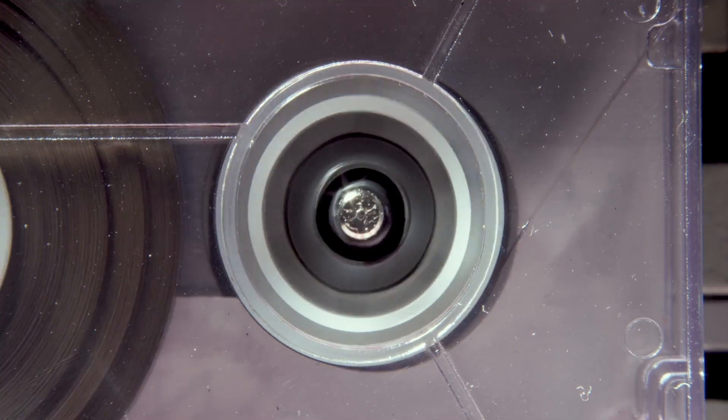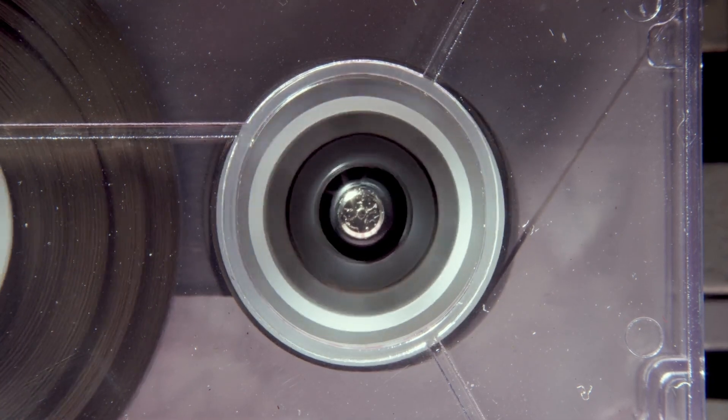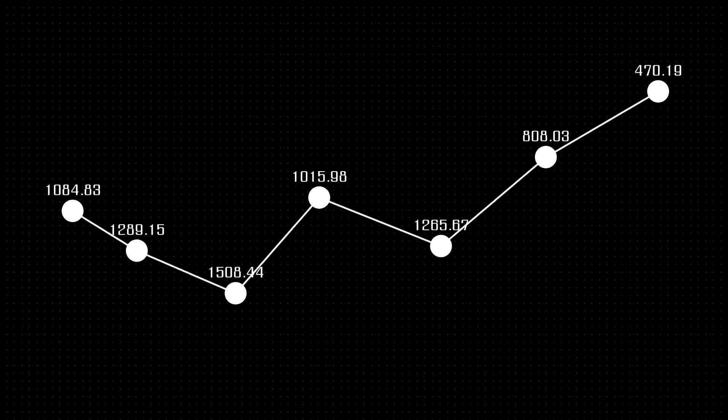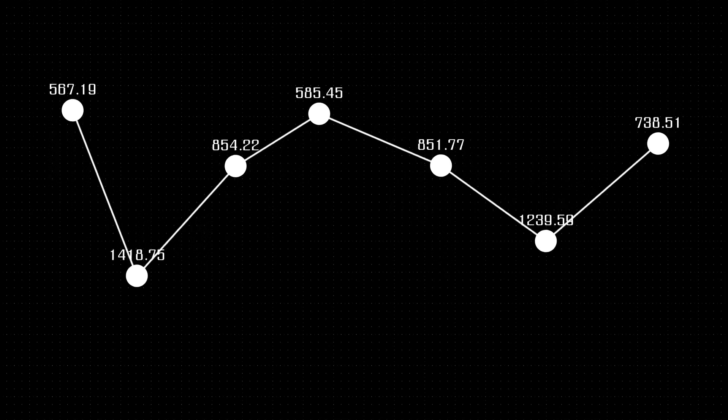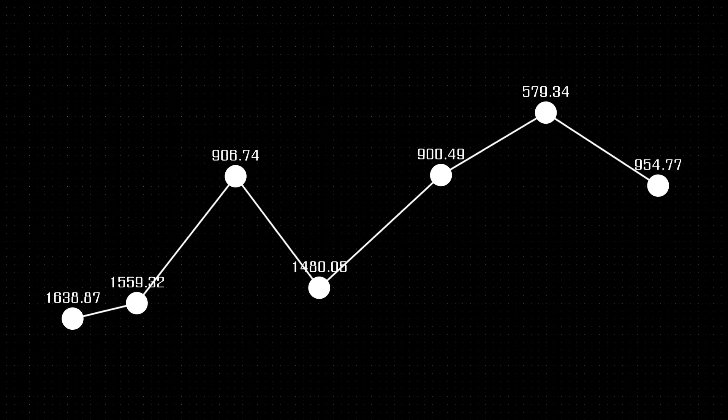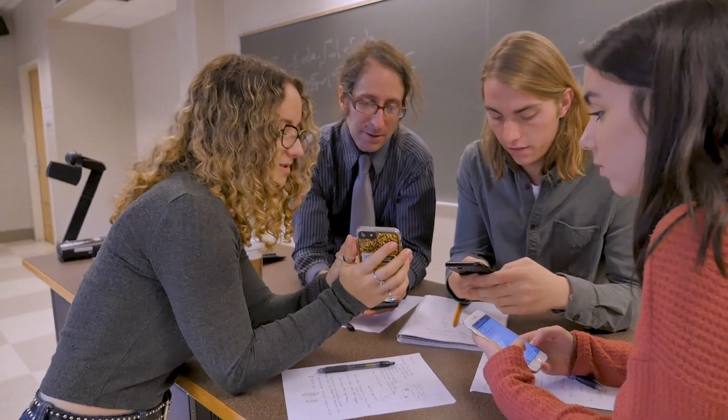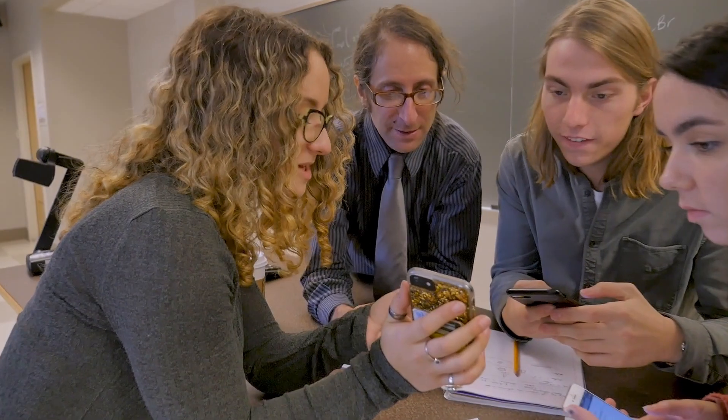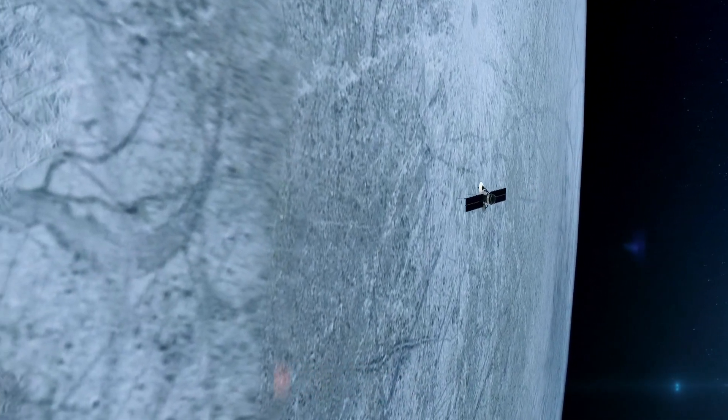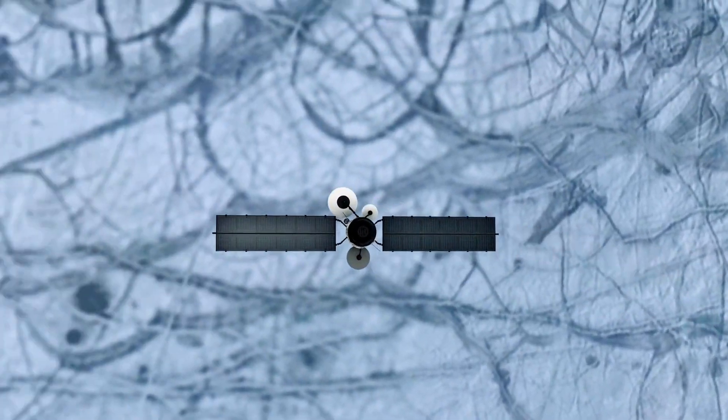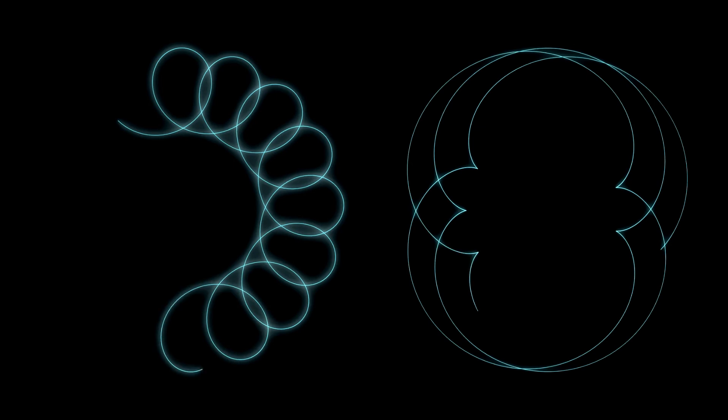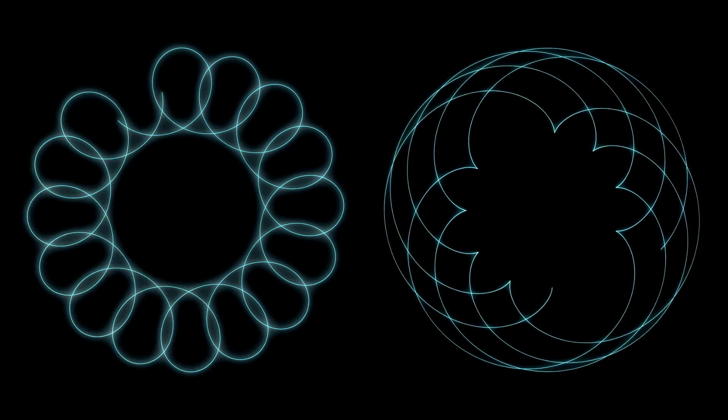Cassini's daring final mission, known as the Grand Finale, brought us unprecedented insights into Saturn and its rings. During its last orbits, the spacecraft dived between Saturn and its innermost ring, providing detailed data about the planet's atmosphere, magnetic field, and gravity. It confirmed that the rings are gradually losing mass as ice particles spiral inward, creating what scientists call ring rain. If this process continues, Saturn's iconic rings may eventually disappear.